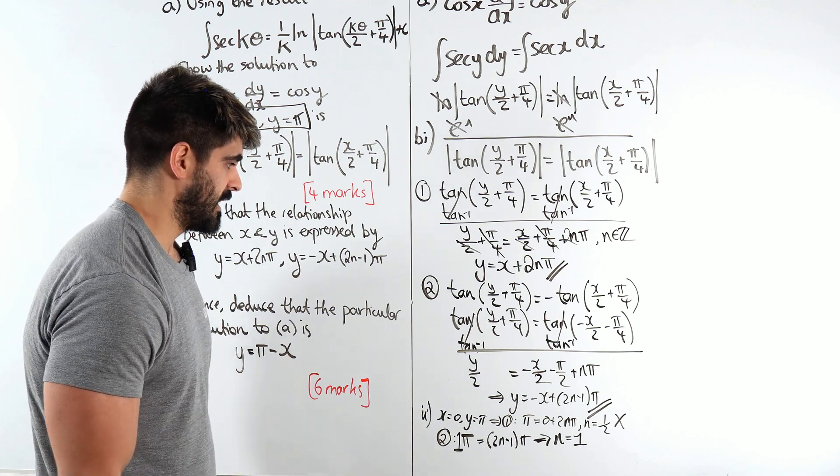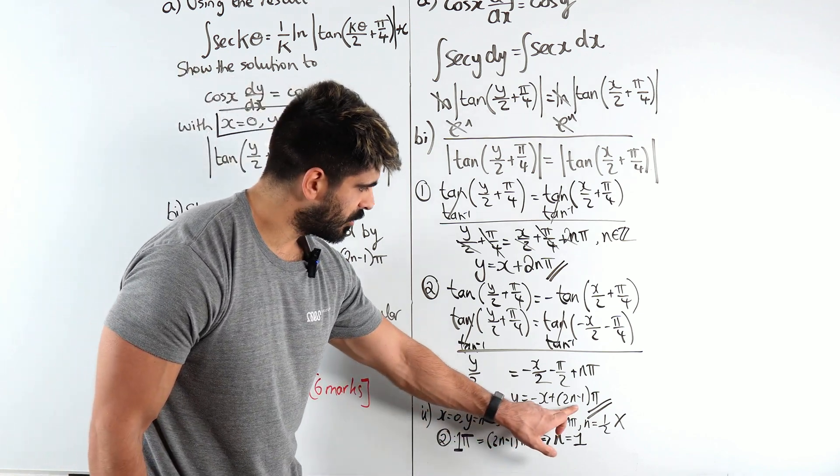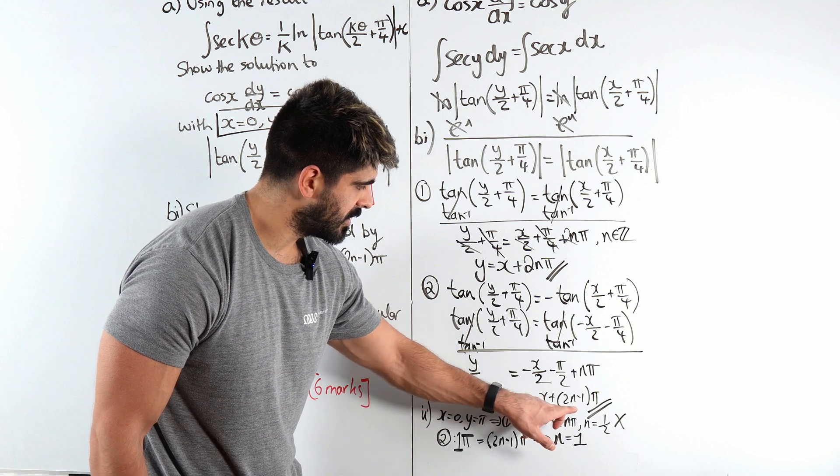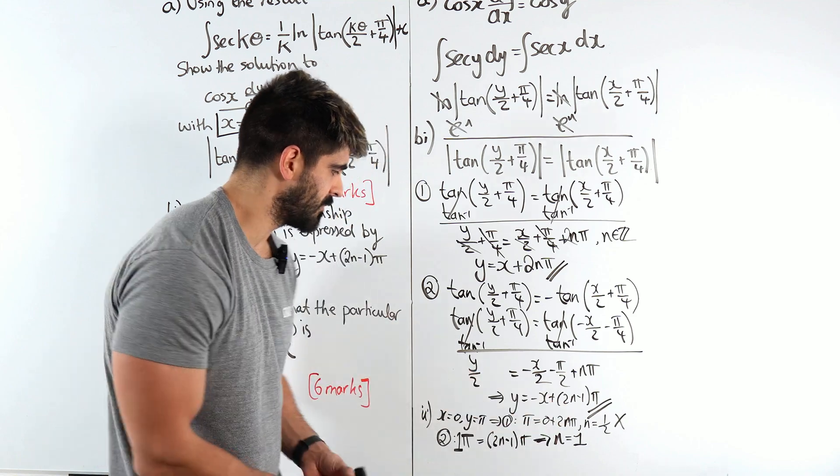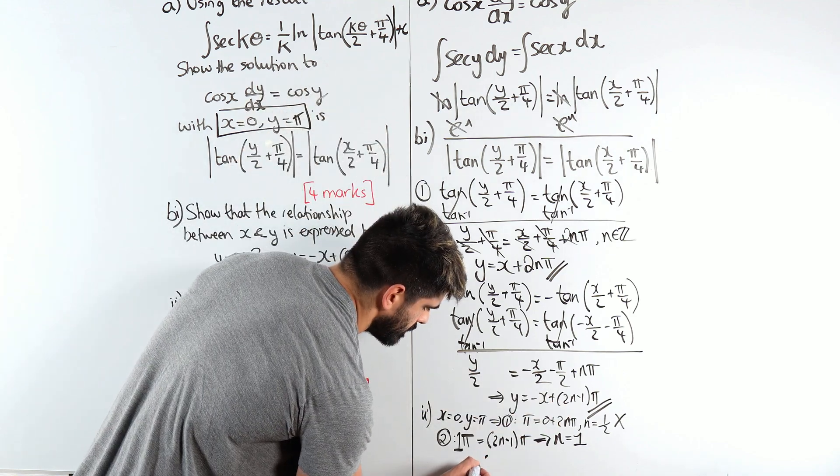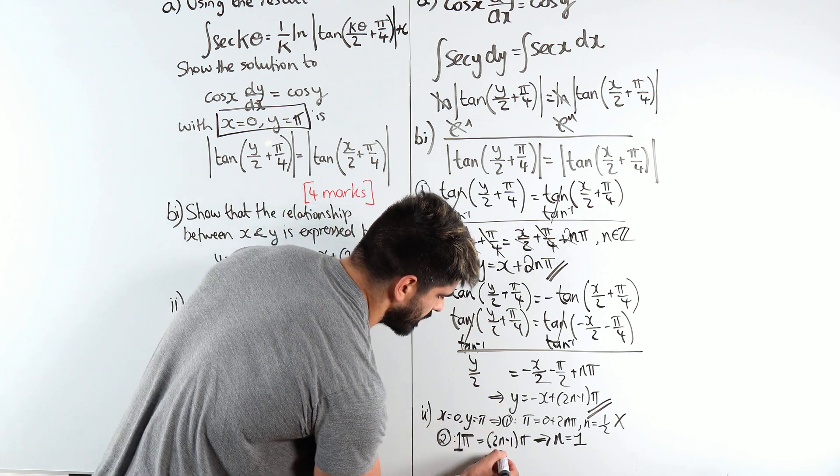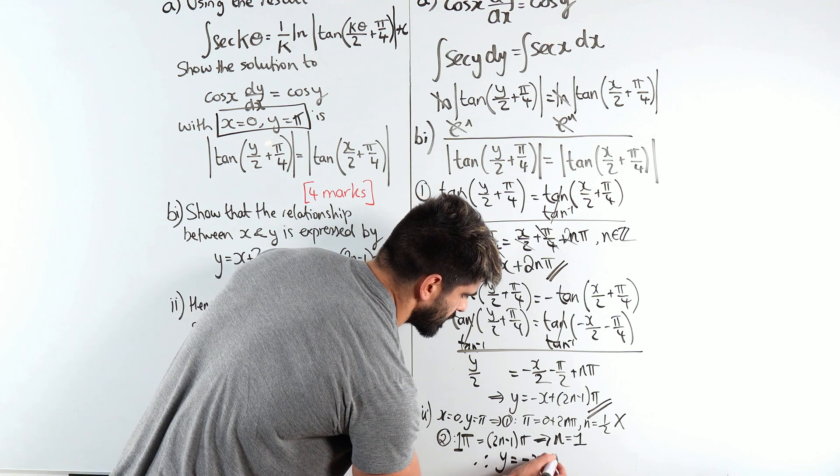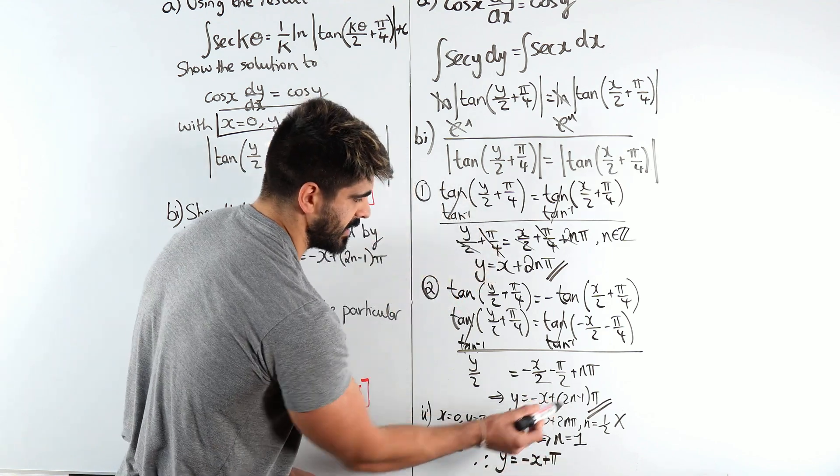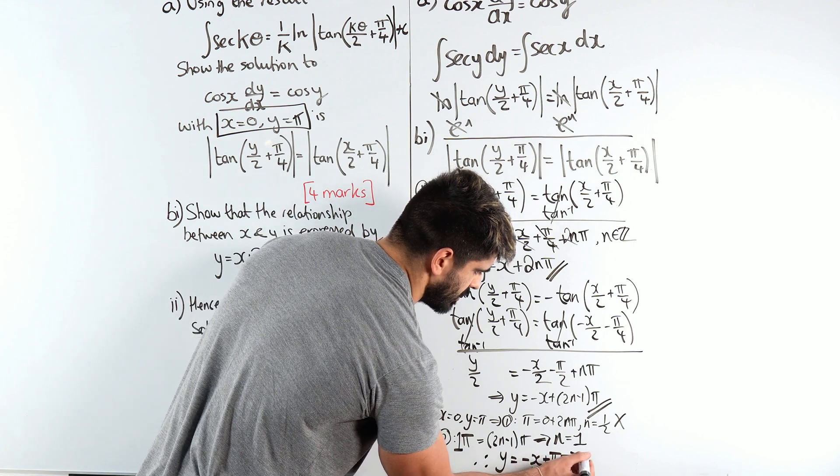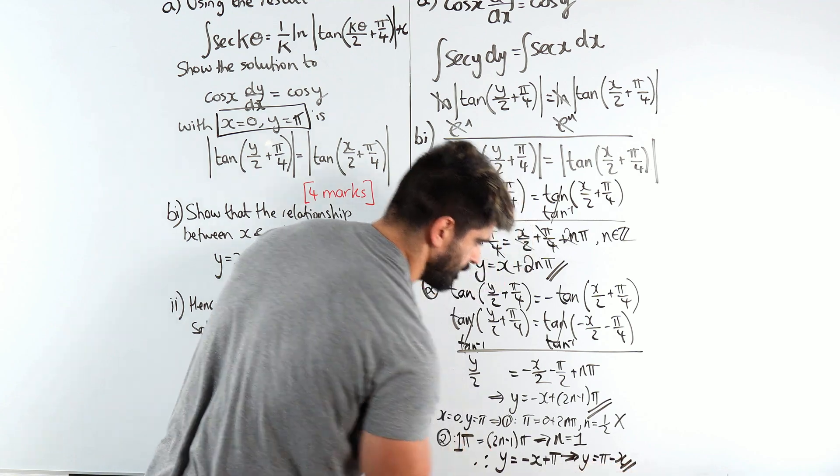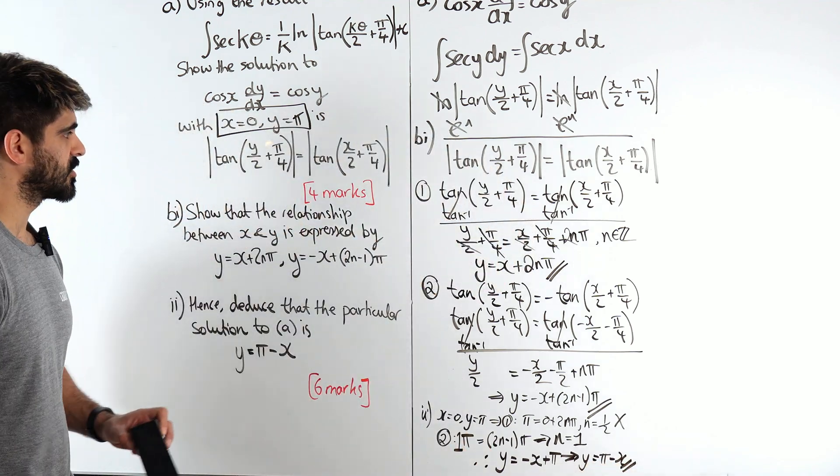So when n is 1, we're going to get y is minus x plus, when n is 1, remember this was just pi. So therefore, when we sum it back in, y is minus x plus pi. When n is 1. Which in the question, they just put the positive one first, pi minus x. And that's our solution.